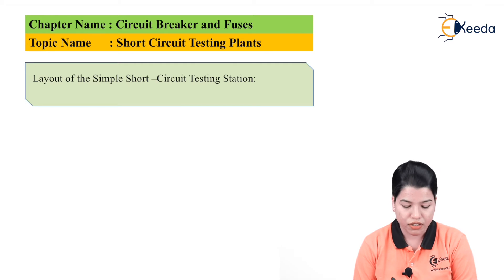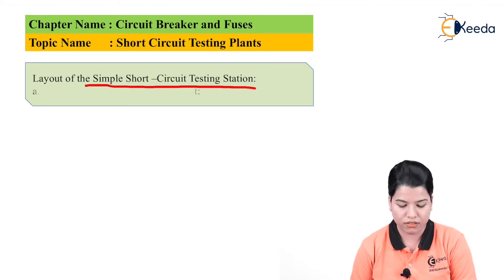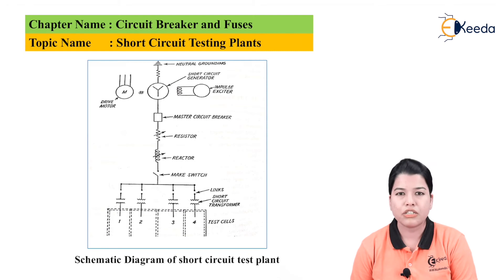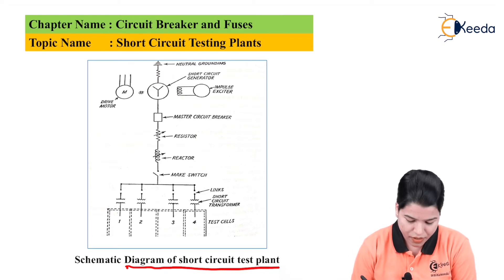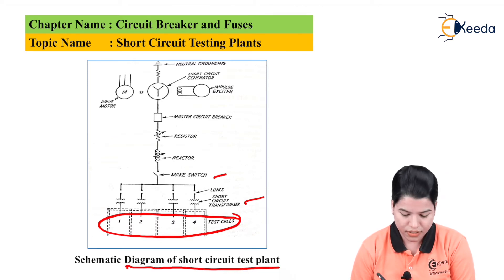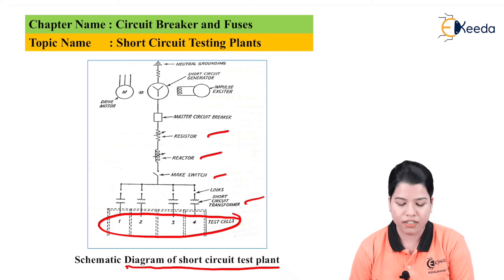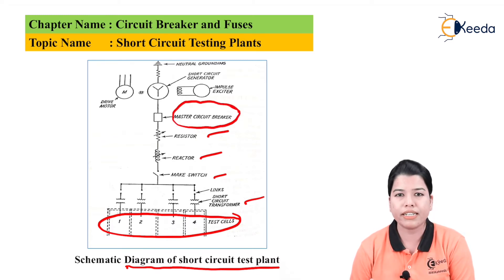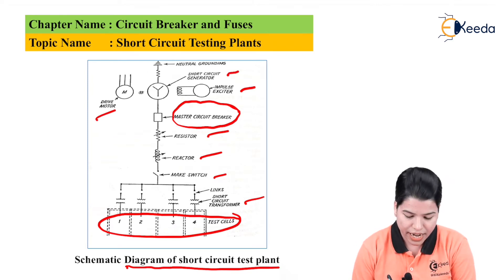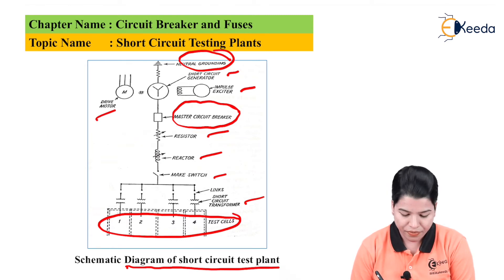Now let us see the layout of a simple short circuit testing station. The schematic diagram shows various test cells, short circuit transformers, a make switch, a reactor, a resistor, and the master circuit breaker. One impulse exciter is needed, along with a drive motor coupled to the short circuit generator, and neutral grounding. The master circuit breaker is connected so that if the circuit breaker under test fails to operate, the master circuit breaker will protect the complete system.